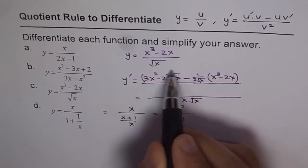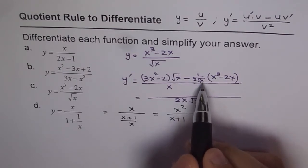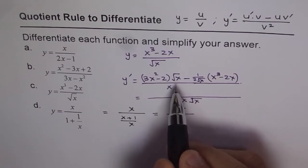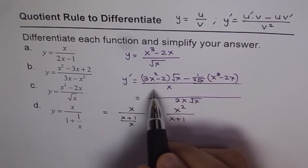And now this does not have this factor of 1 over 2 square root of x. So you will have to multiply and divide by 2 square root of x. So when you do that, the square root of x and square root of x will become x. So you have 2x written here.